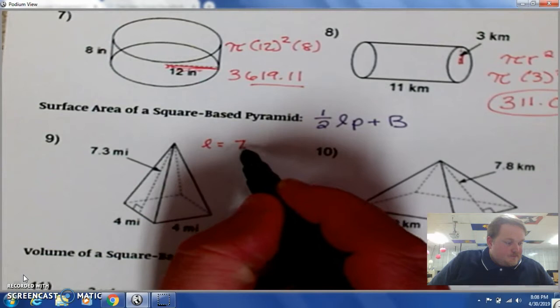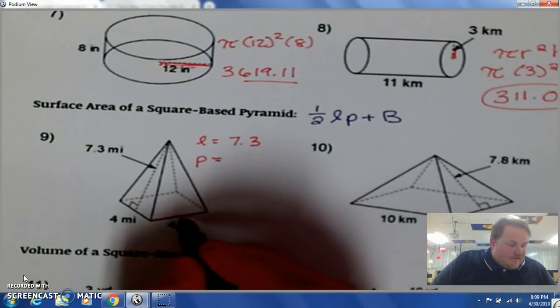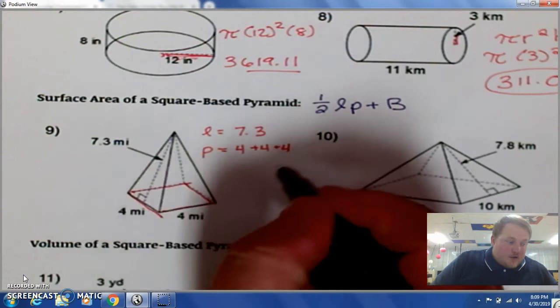What is P? Well, P stands for perimeter. So perimeter is as if you're building a fence around the bottom. You've got 4 there, right there, that's another 4, that's another 4, and then this is your final 4. So your perimeter is 16.